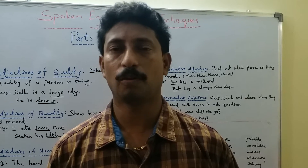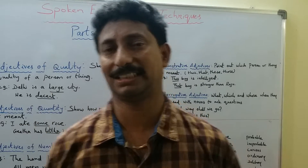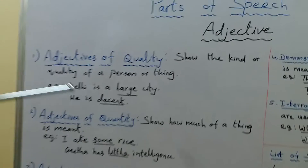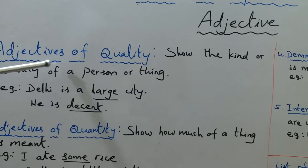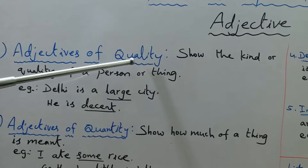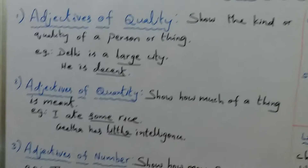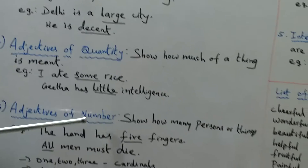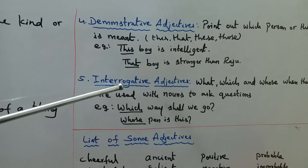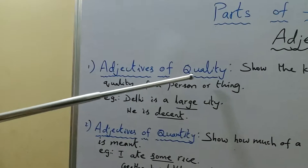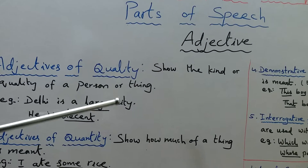These adjectives are broadly categorized into five types. What are they? Let us take a look. First: adjectives of quality. Second: adjectives of quantity. Third: adjectives of number. Fourth: demonstrative adjectives. And fifth: interrogative adjectives. Let's start with adjectives of quality — what does it mean?